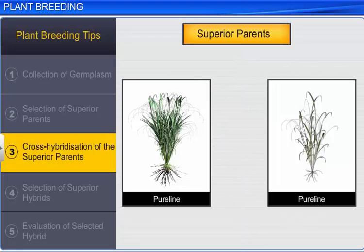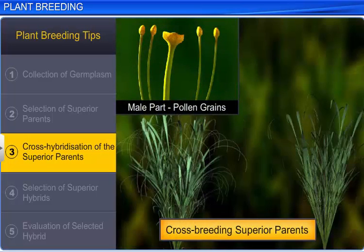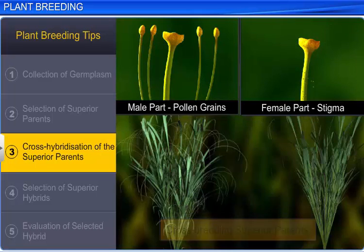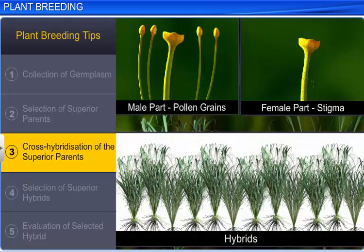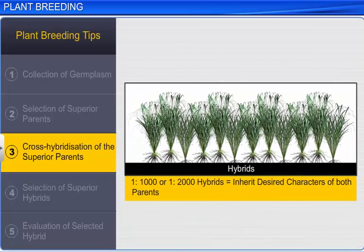The third step is cross-hybridization of the superior parents. This is done by collecting the pollen grains of one parent plant and placing them on the stigma of the other parent plant. However, the hybrids obtained may not contain all the desired characters present in the superior parents. In fact, one in one thousand or two thousand hybrids obtained may contain the desired characters of both superior parents. Hence, this step is considered cumbersome.